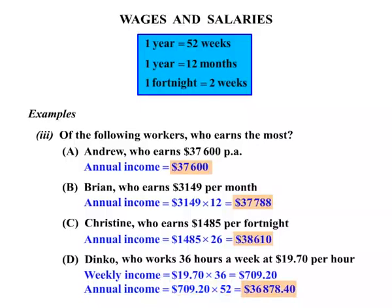Now that we have all four annual incomes, we can compare them. We can see that Christine comes out on top at $38,610. So Christine is the answer to the question.